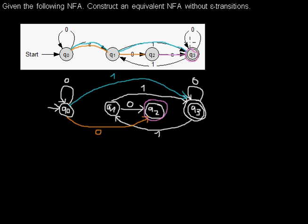Now I can consider the other transitions from Q2. When I'm in Q2 and want to read a zero, I can take the epsilon transition and then take this loop. And when I'm in Q2 and need to read a one, I can take the epsilon transition and then take the transition to Q1. That is the same as directly going from Q2 to Q1 while reading a one.